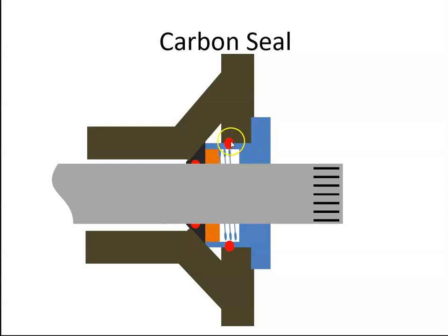On the carbon seal itself there are also some O-rings, and that will also stop any seepage of oil around out this way.